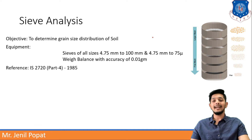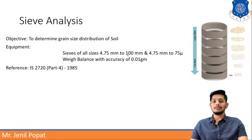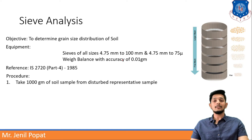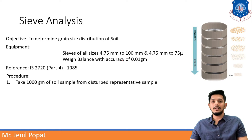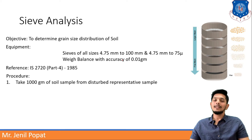The reference is given by IS 2720, Part 4. This IS code suggests this procedure. The very first step you will do for sieve analysis is take 1000 grams of soil sample from a disturbed representative sample.